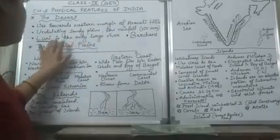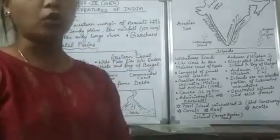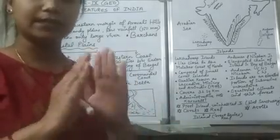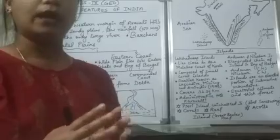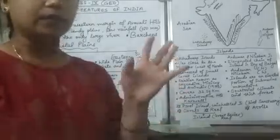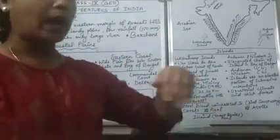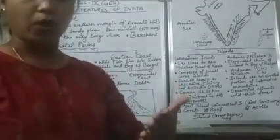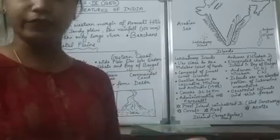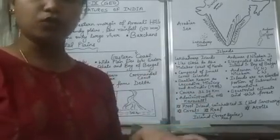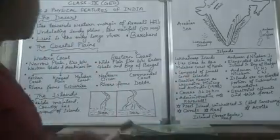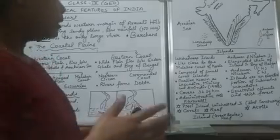The only large river found in this region is the Luni river. Apart from it, barchans are also found in this region and they cover a major area here. Barchans are crescent-shaped structures which are formed when the wind blows and carries sand particles, depositing them at the windward side. Opposite to the windward side we find a sinking shape, creating a crescent shape. These barchans keep on shifting — if you find a barchan in one place today, the next day you will find it in another place.